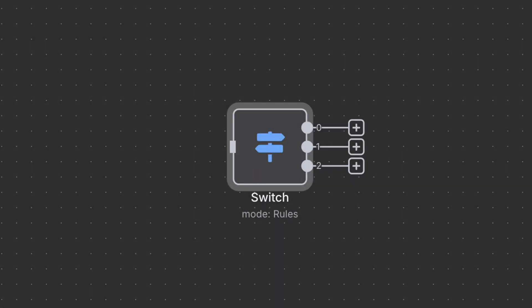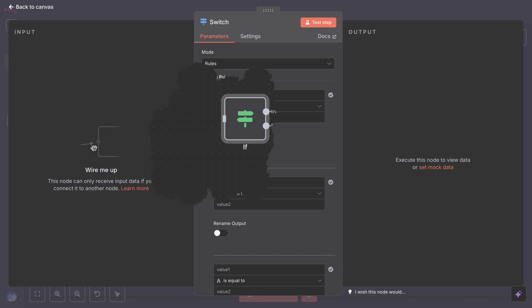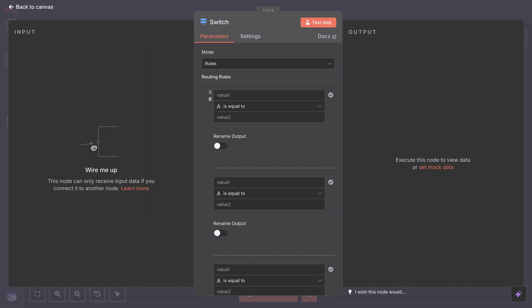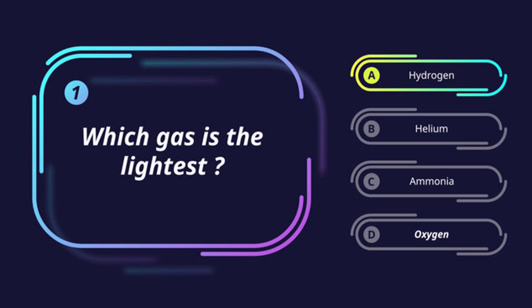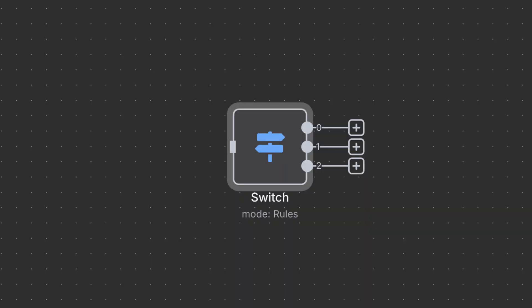Welcome back. In this video we are going to explore the switch node in N8N. If you thought the if node was useful for yes/no decisions, the switch node takes it a step further. It's like asking a multiple choice question instead of just yes or no. This node will let your automation workflow choose between multiple paths based on your data. We will keep it beginner friendly with simple language and examples.